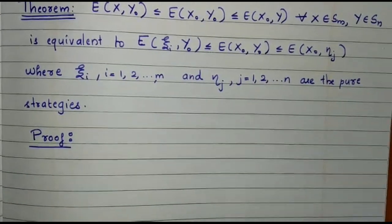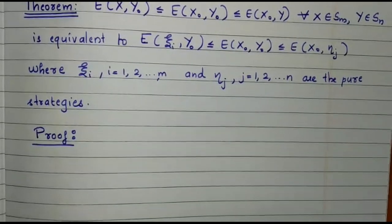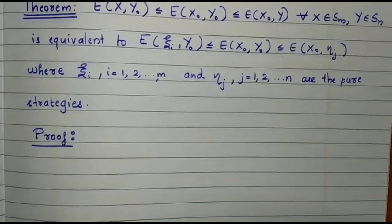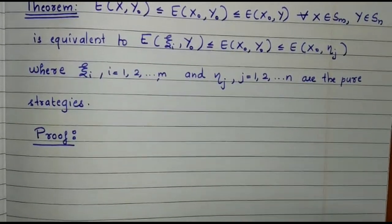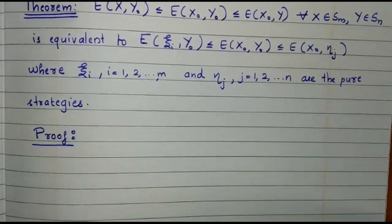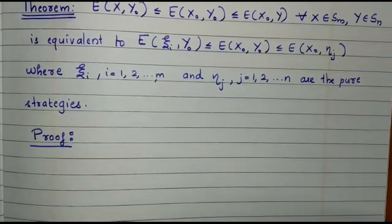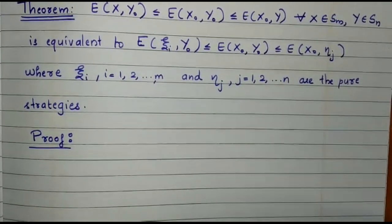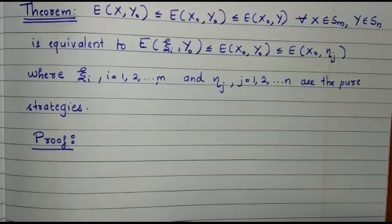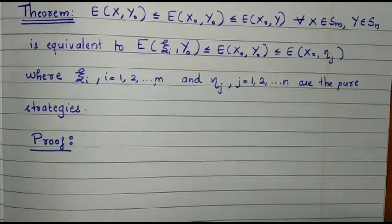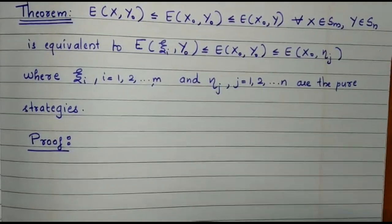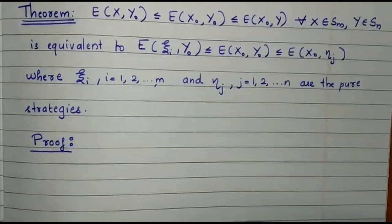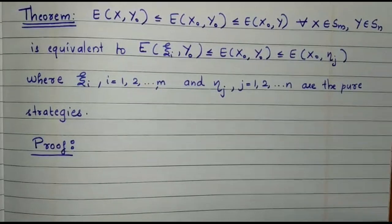Recall, the pure strategies are those whose i-th component is unity. In ψi, the i-th component is unity and all other components are equal to 0. Similarly, in ηj, the j-th component is unity and all other components are equal to 0.